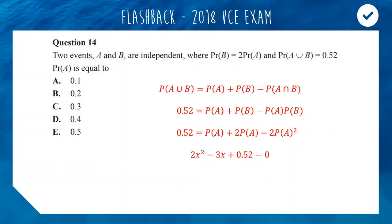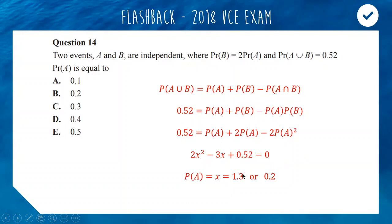It's not a very nice quadratic — we need to solve it using the quadratic formula. Applying the quadratic formula to this equation gives you 2 answers: 1.3 and 0.2. Obviously 1.3 cannot be a probability because that is above 100%, so the only logical outcome is 0.2, which is your answer, B.